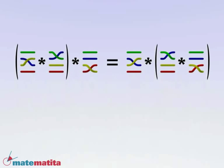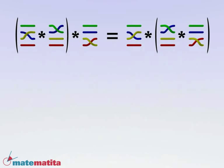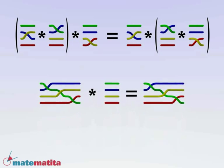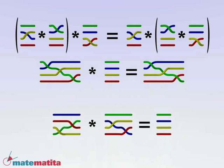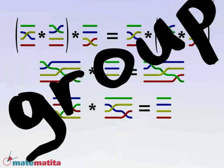So far, we have seen that on the set of braids we can define an associative operation. It has a neutral element, and for every element in the set there is an inverse. Such a structure is called a group.